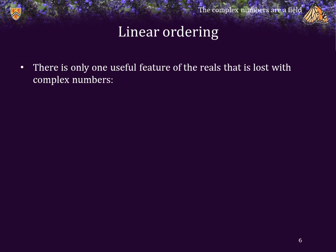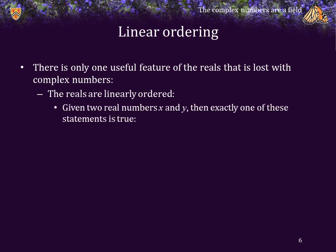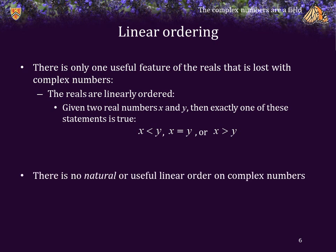There's only one really useful feature about the real numbers that is lost with complex numbers: the reals are linearly ordered. That says that if I have two real numbers, x and y, exactly one of these statements is true — either x is less than 0, x equals 0, or x is greater than 0. There's no such natural or useful linear ordering on complex numbers. All we have is that two complex numbers are either equal or they are not equal.